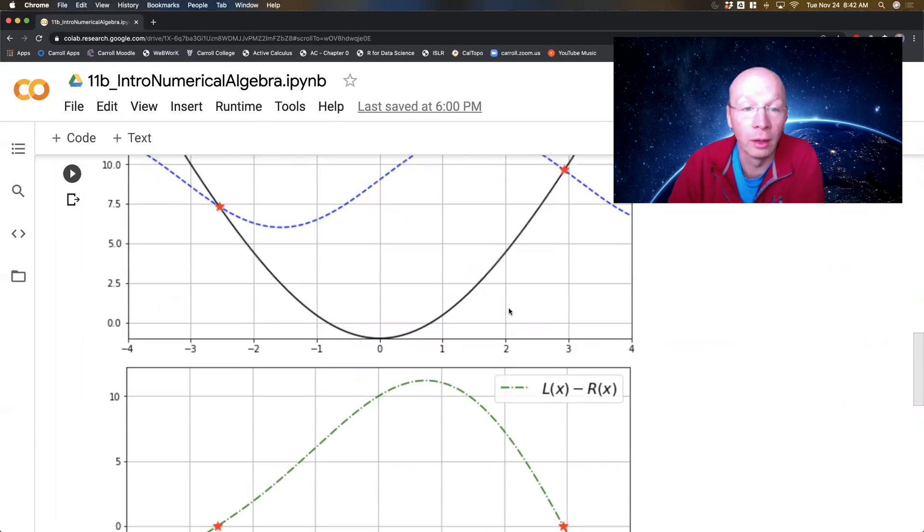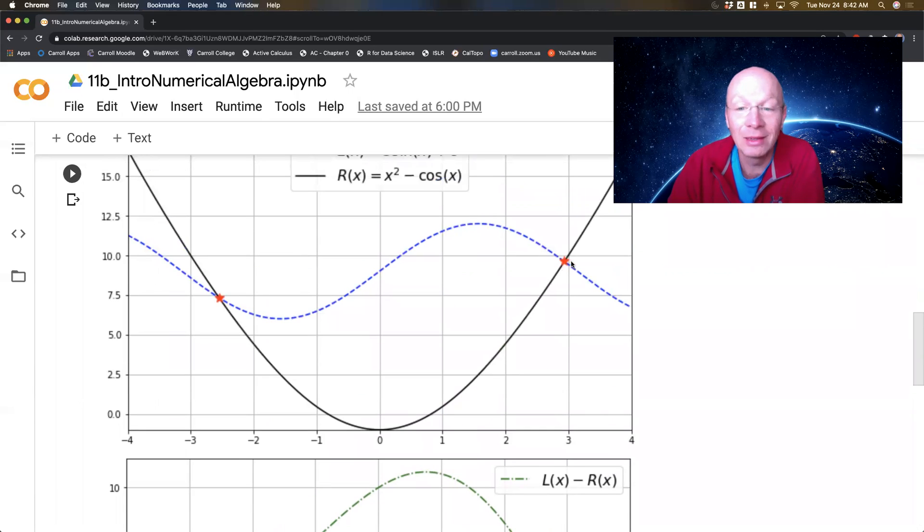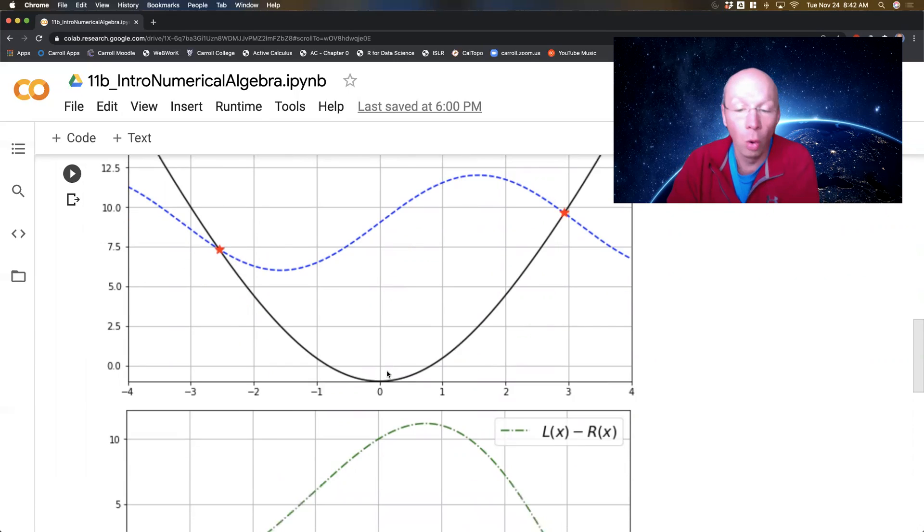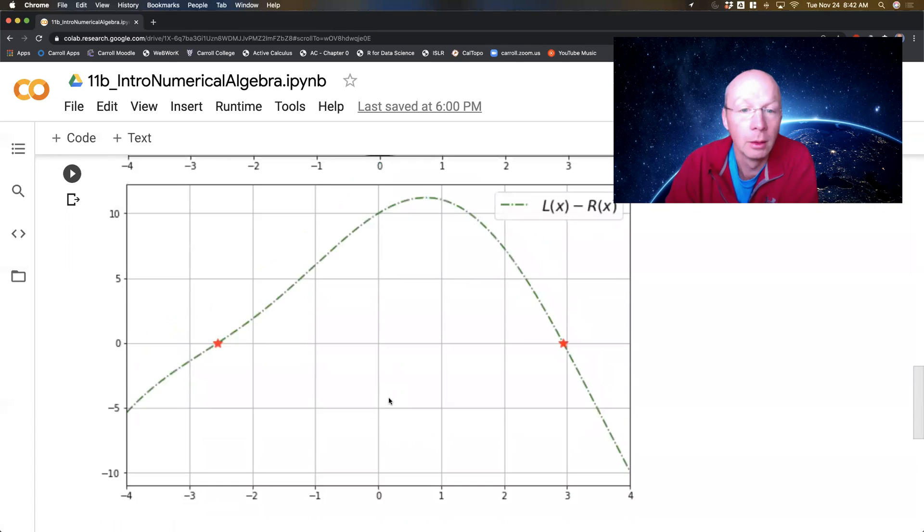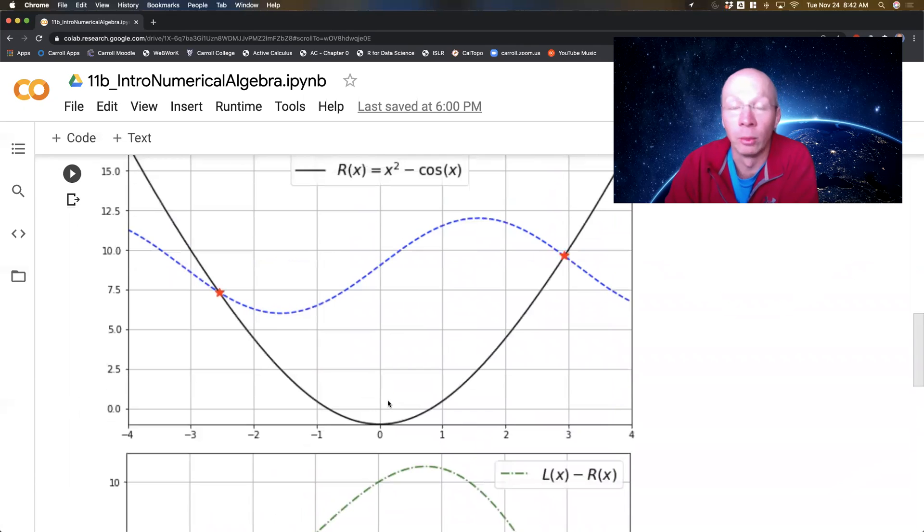So what we're looking for is either where these two intersect, where left equals right, where they intersect, or where left minus right equals zero. Now I'm belaboring this fact because we're actually going to look at every algorithm that we use solving some function equals zero, which is really left side minus right side equals zero. So I want to find where these two stars are, and we're going to build algorithms to do that.